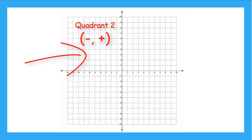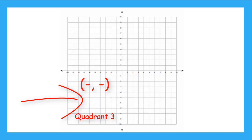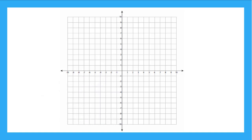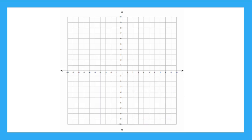And how about quadrant 3? The ordered pairs are both negative — negative x, negative y. And how about quadrant 4? Yes, the last one, with ordered pairs that are positive x, negative y. Nice job. Now let's plot some points together.